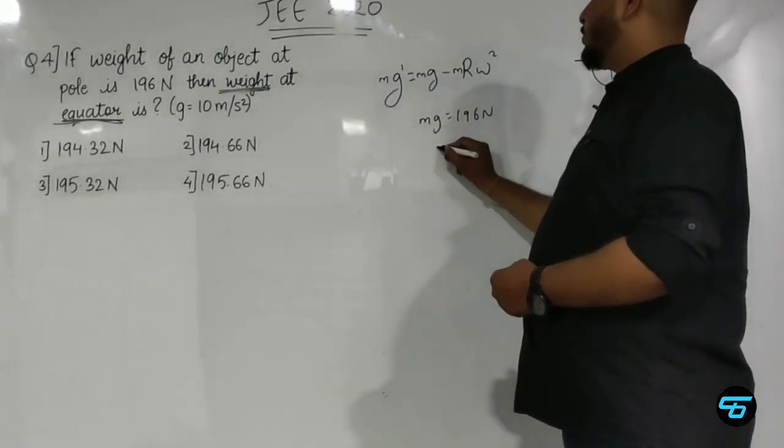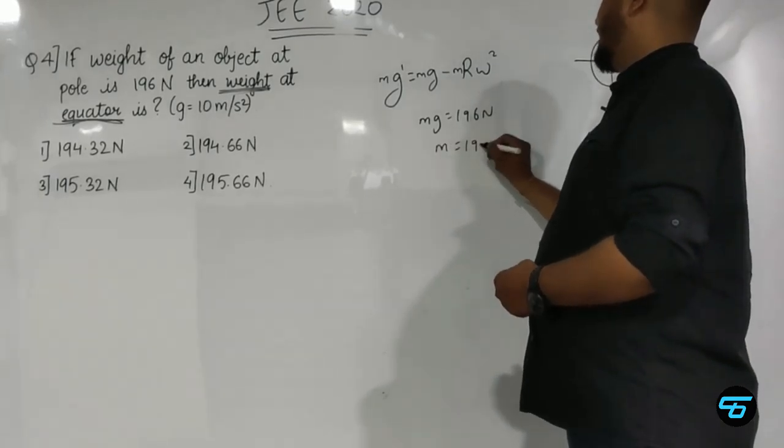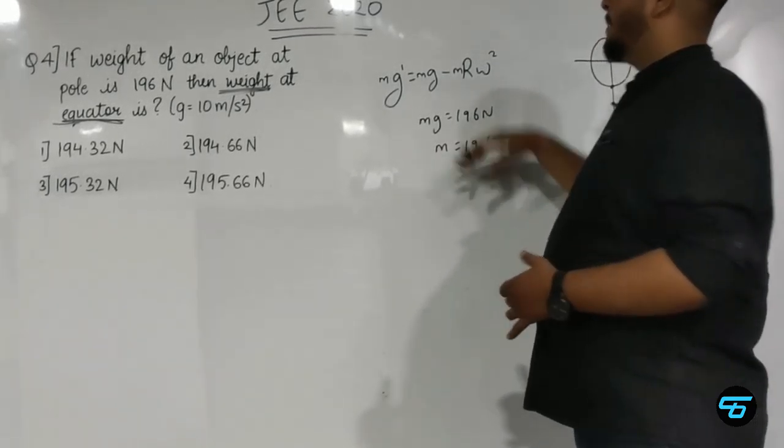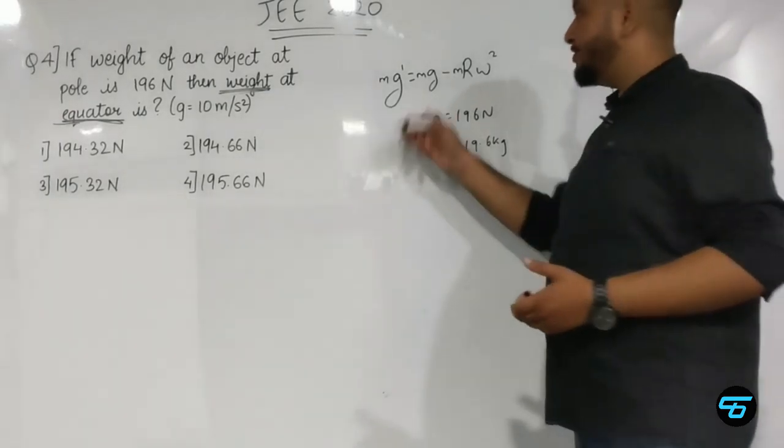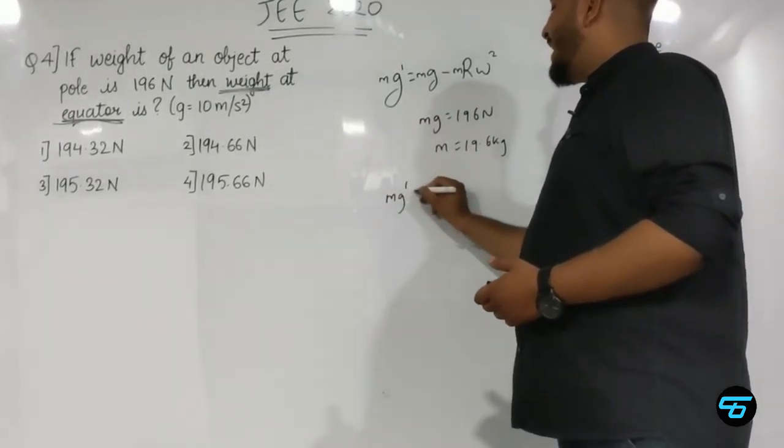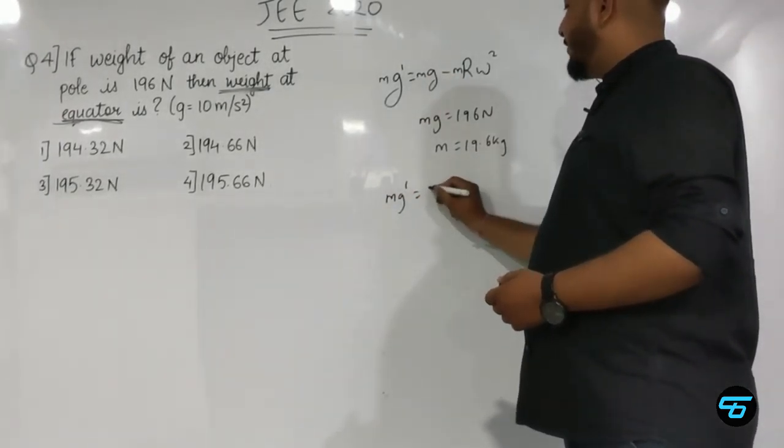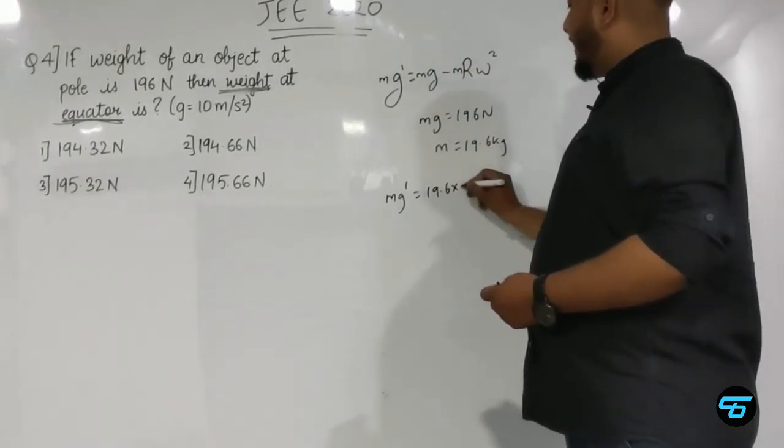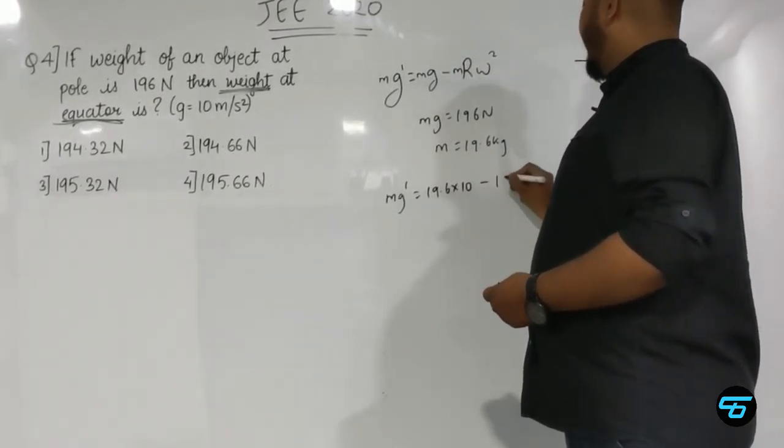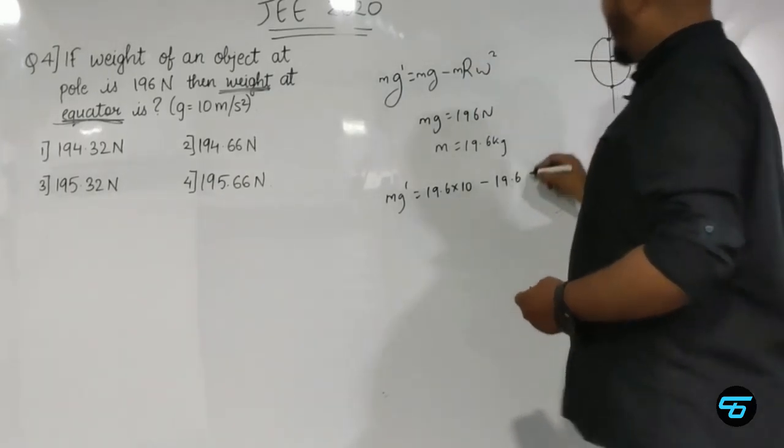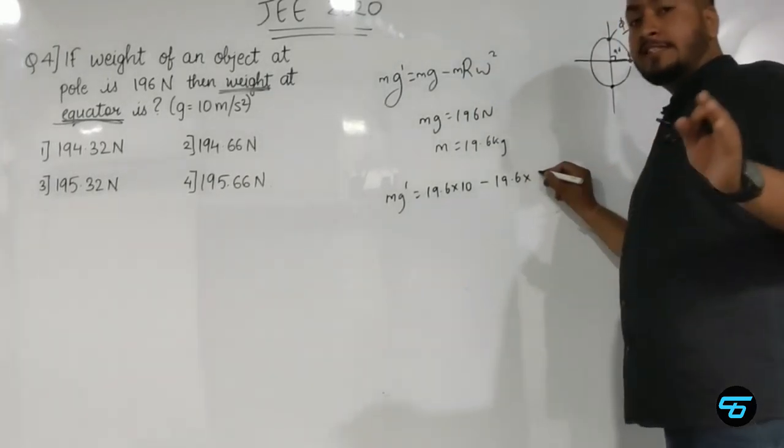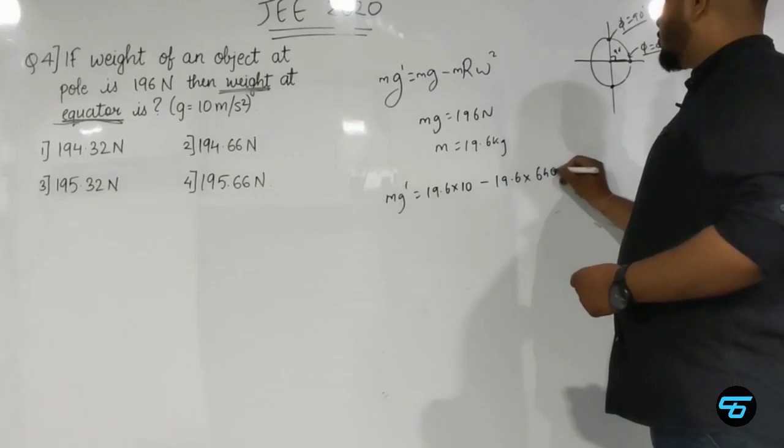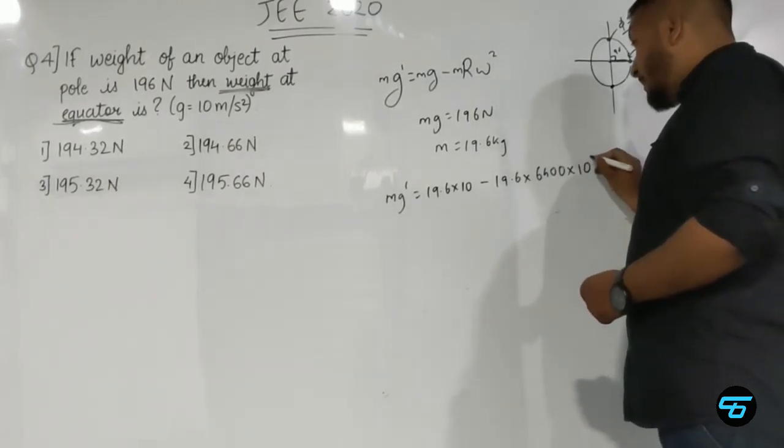Now I need to substitute to find mg dash. mg dash equals mass which I just calculated is 19.6, times g value is 10, minus again 19.6 times r. The value of r is 6400 kilometers, which is 6400 times 10 to the 3 meters.